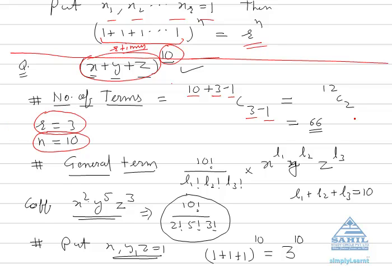The second thing asked in your examination is the general term. The general term here is 10 factorial upon l1 factorial, l2 factorial, l3 factorial, into x raised to power l1, y raised to power l2, and z raised to power l3. The condition is l1 plus l2 plus l3 must equal 10. If you don't follow this condition, that term will not exist in the expansion.